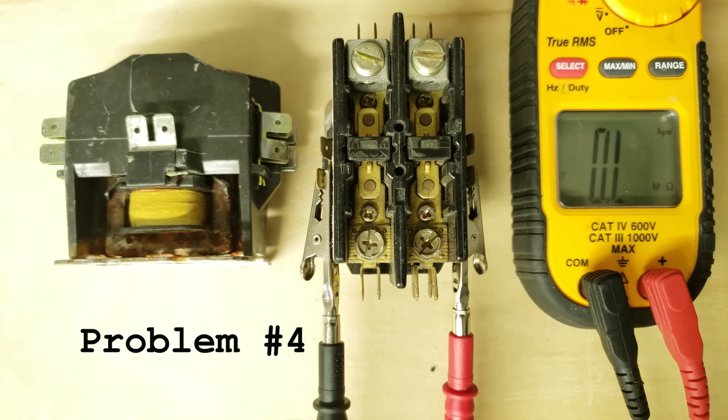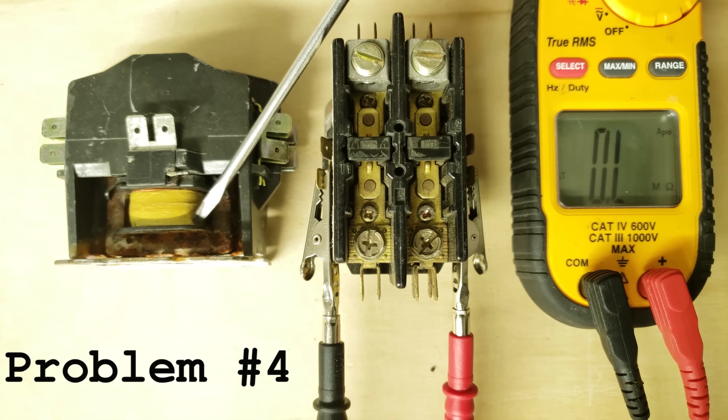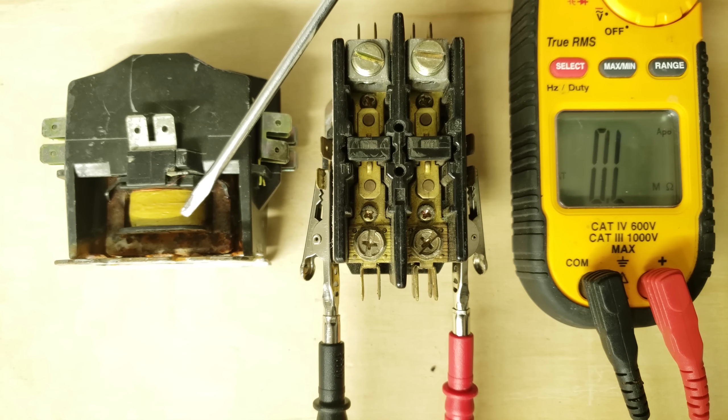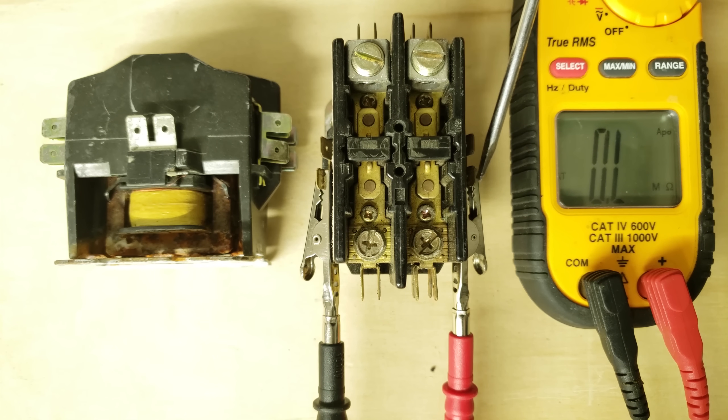Problem number four is when the coil burns out. This could happen due to water or high amperage. In this case you see we're reading the resistance value on the coil with our probes here and we're reading OL which means open line.